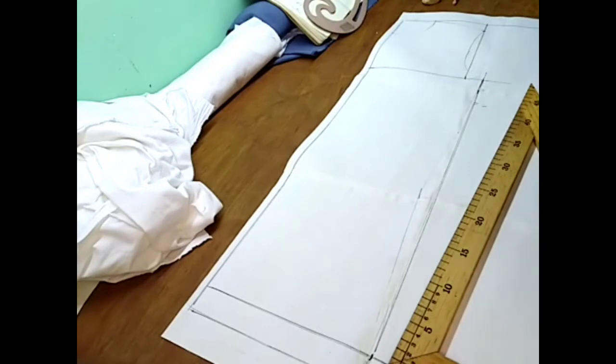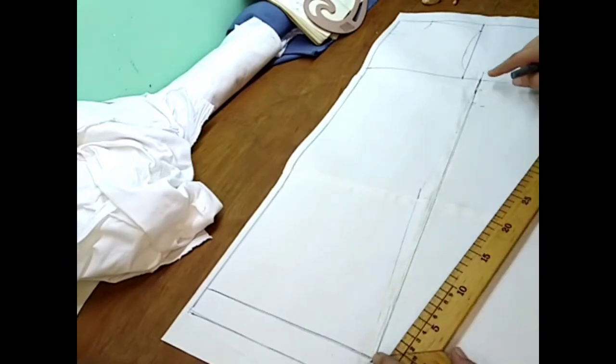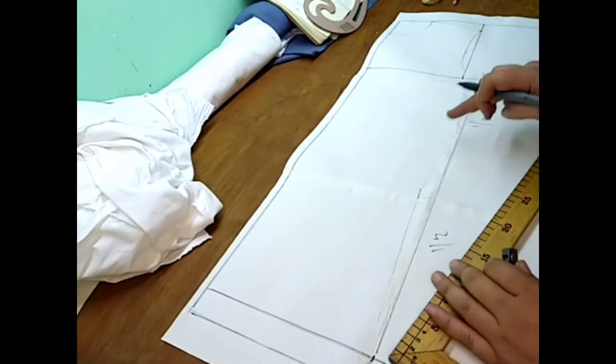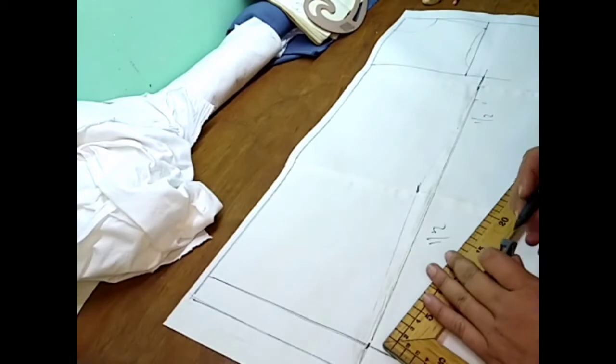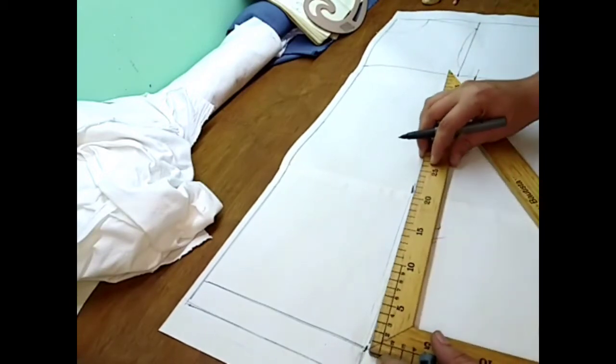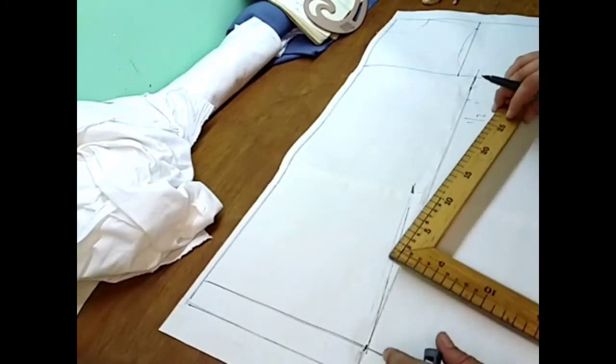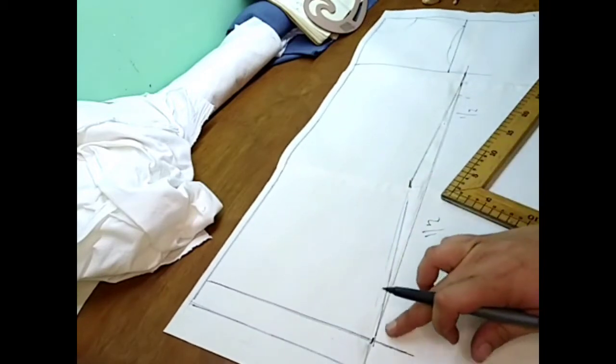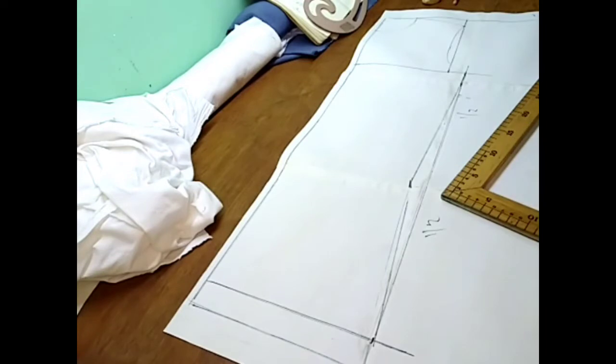Ahora si queremos que esta camisa o esta prenda quede un poco entallada, vamos a dividir de aquí a acá. Vamos a sacar un medio y un medio, vamos a dividirla entre dos, esta línea de costado, y vamos a entrar de un centímetro y medio a dos centímetros. Unimos el largo de mi camisa, esta viene siendo la línea de la cintura, de esta manera. Esto es como una pequeña pinza para entallar un poco la prenda.